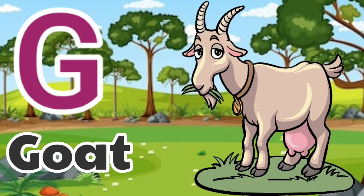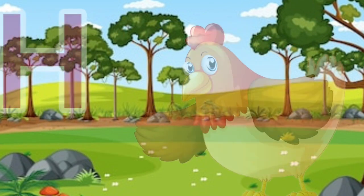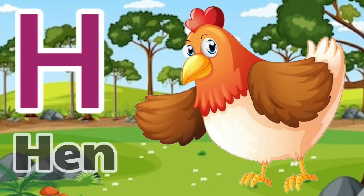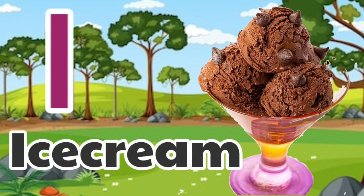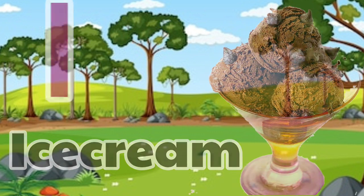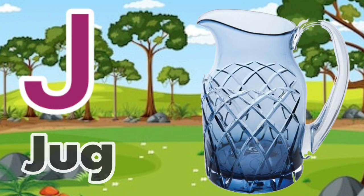G. G for Goat. H. H for Hen. I. I for Ice Cream. J. J for Jug.